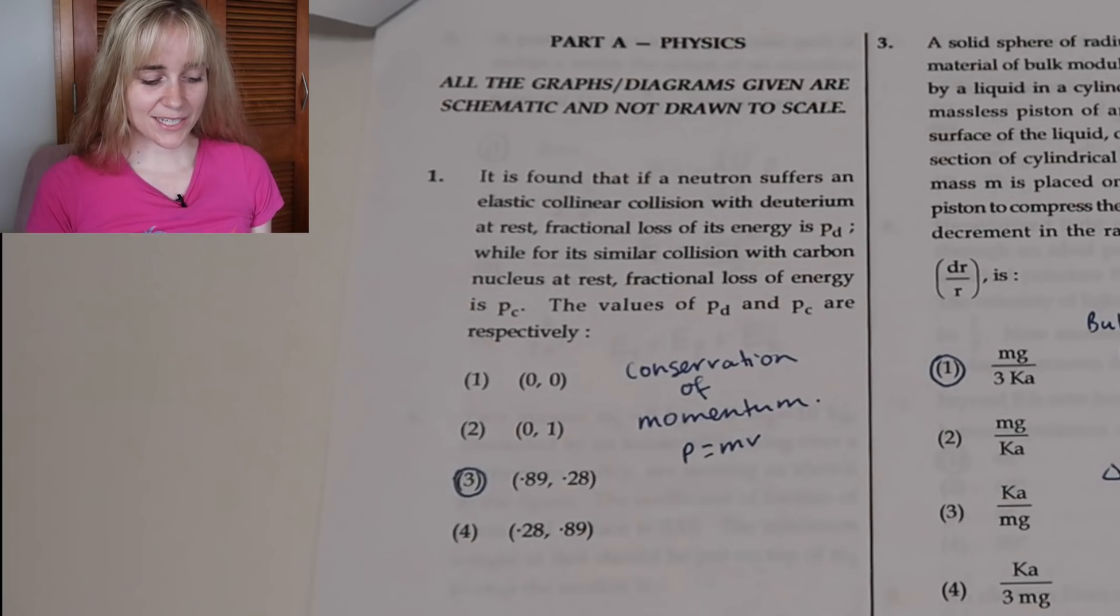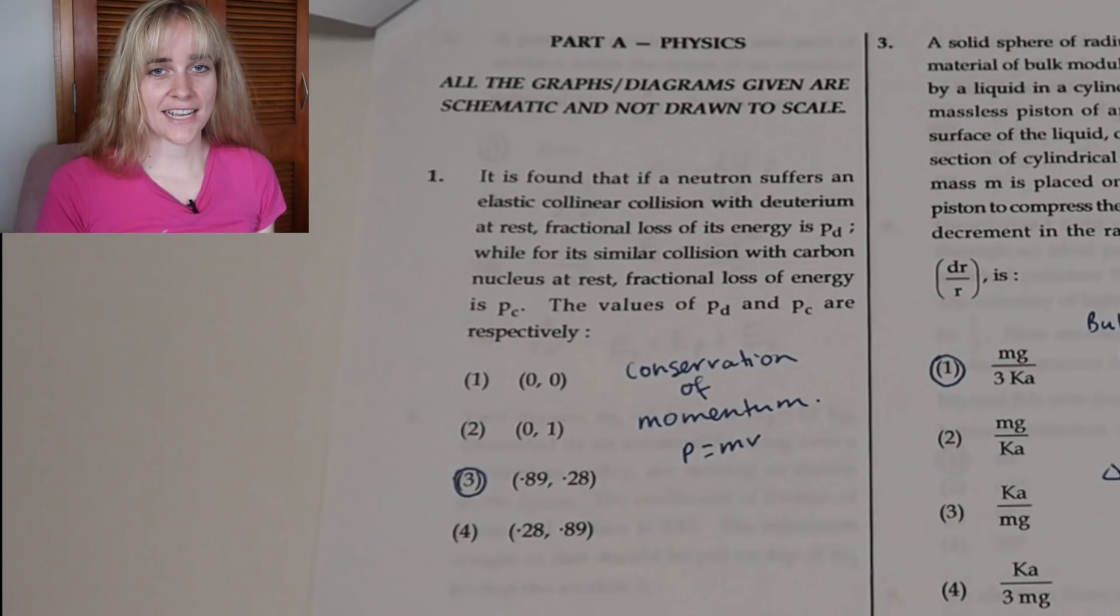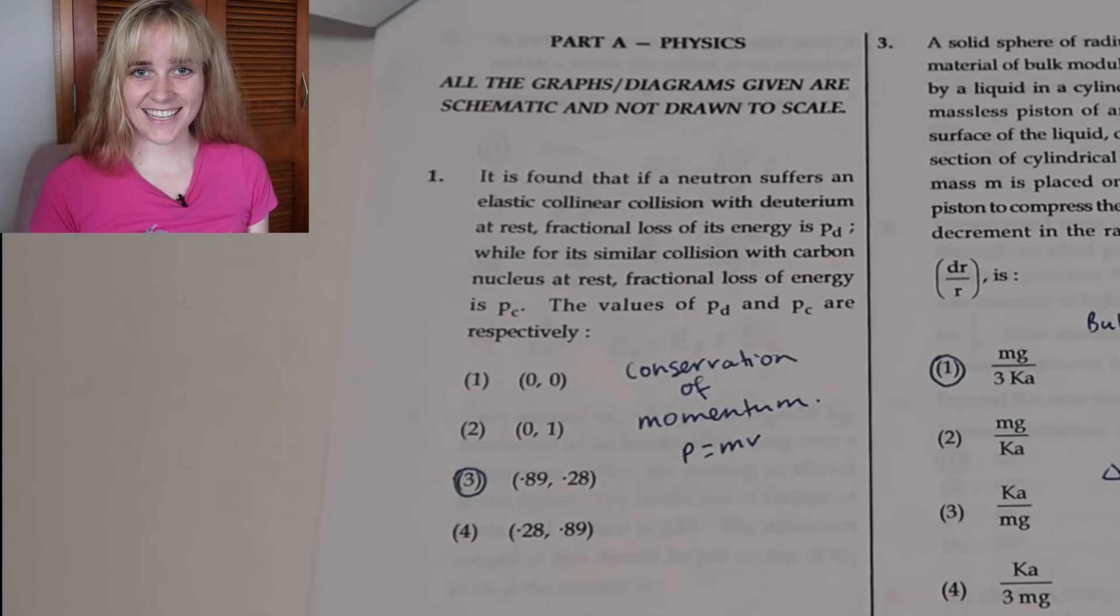The first question here is about collisions and I'll read it out: It is found that if a neutron suffers an elastic co-linear collision with deuterium at rest, fractional loss of its energy is PD, while for its similar collision with carbon nucleus at rest, the fractional loss of energy is PC. So we are being asked to find the values of PD and PC. We need to know how much energy is being lost by this neutron through these two different collisions. Now I'm trying to solve these problems with minimal memorization. Sometimes when you look at these solutions to these JEE exams, it seems like if you had memorized a certain step it is kind of a shortcut to solving the problem. But without trying to memorize too much at all, let's just go back to the basics.